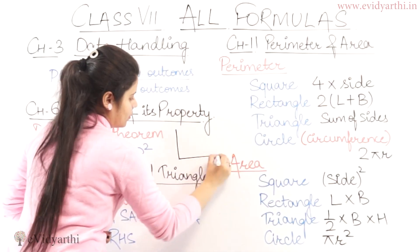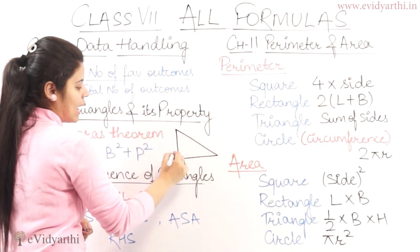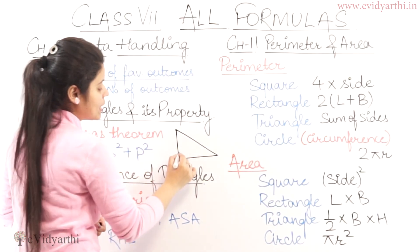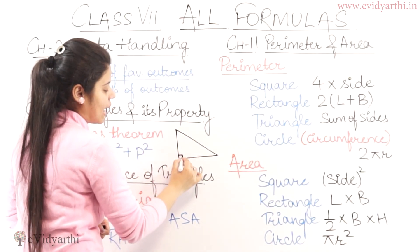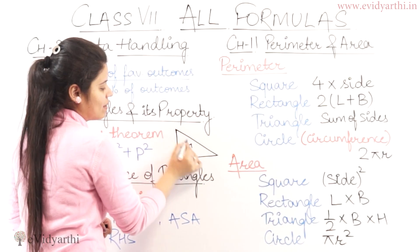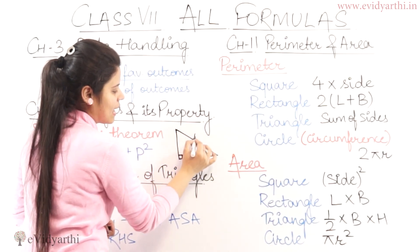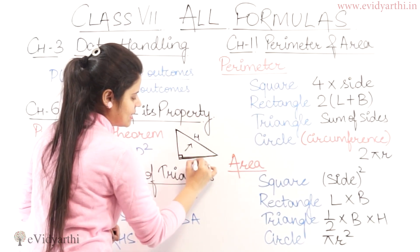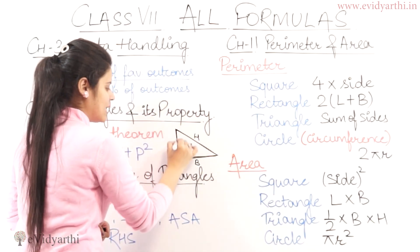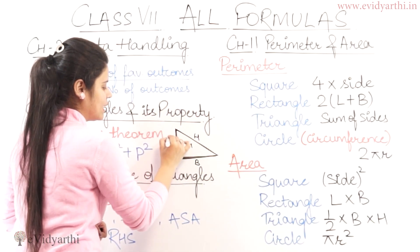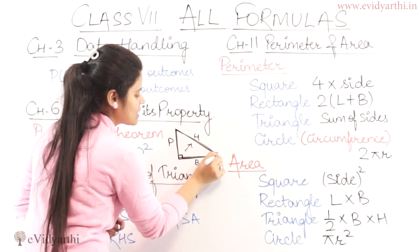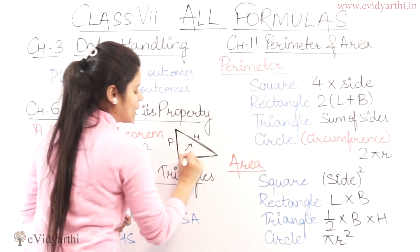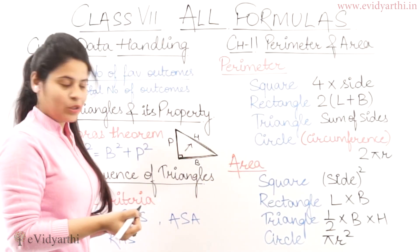If you have a triangle like this, and this is a 90-degree angle, then this one is the hypotenuse, this is the base, and this is the perpendicular. So, hypotenuse squared equals perpendicular squared plus base squared.